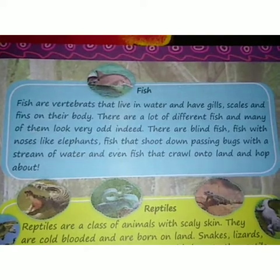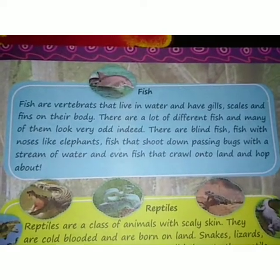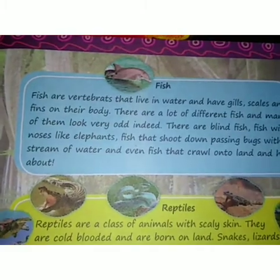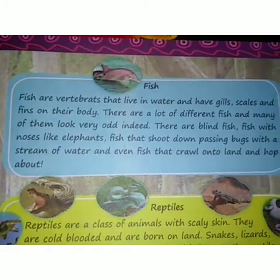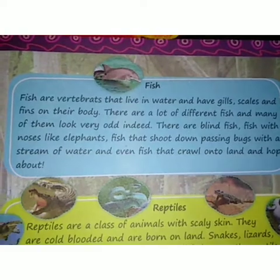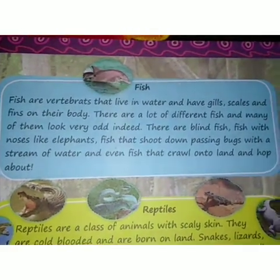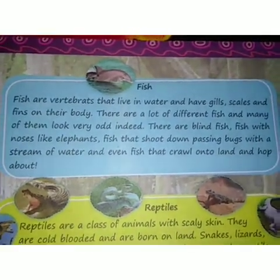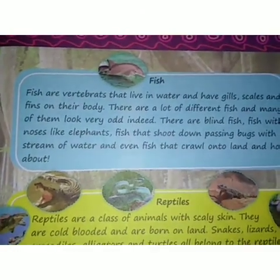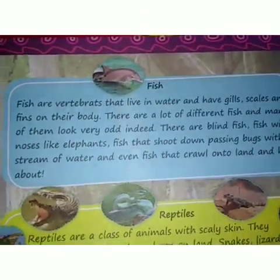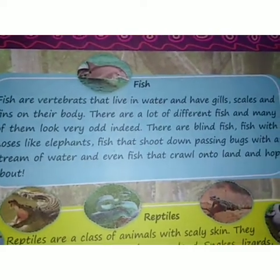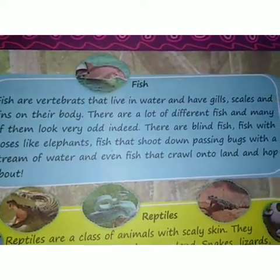There are even fish that shoot down passing bugs with a stream of water, and fish that crawl onto land and hop about. Fish are also vertebrates which have gills to breathe oxygen in the water, and scales and fins on their body. There are very different fishes in the world and some of them are very old.